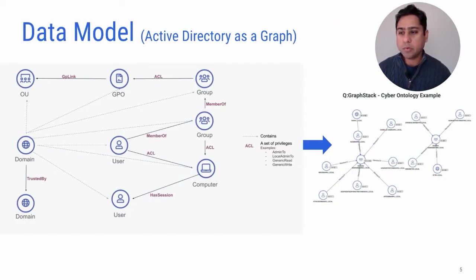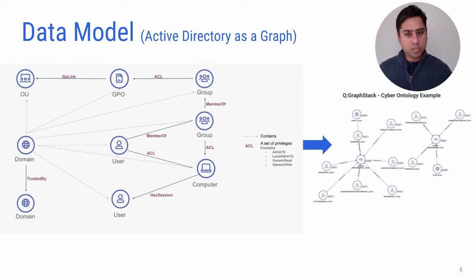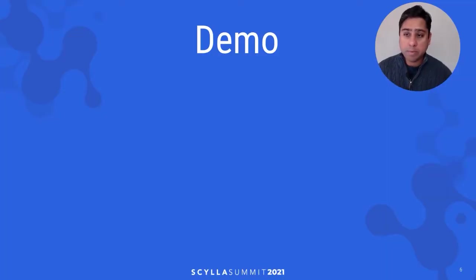In this particular use case, we ingest Active Directory data from the customer's side and produce a graph representation of that data. Active Directory itself is essentially a database, but if you want to ask more sophisticated questions such as what attack paths exist to key assets, or what access patterns are structured in my directory, your traditional Active Directory list view and query paradigm is going to fall short. So we're going to jump into a demo and highlight some of the features we've been developing over the past few months.